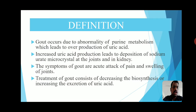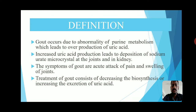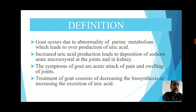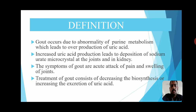In the definition of gout: gout occurs due to abnormality of purine metabolism, leading to the over-production of uric acid. Gout is a metabolic disorder in which uric acid is not metabolized properly, causing increased uric acid production. This leads to the deposition of sodium urate microcrystals at the joints and in the kidneys.